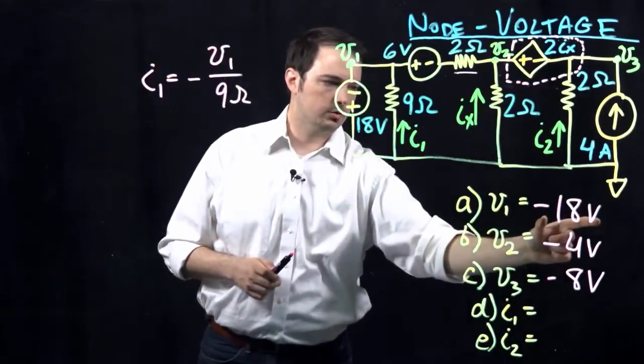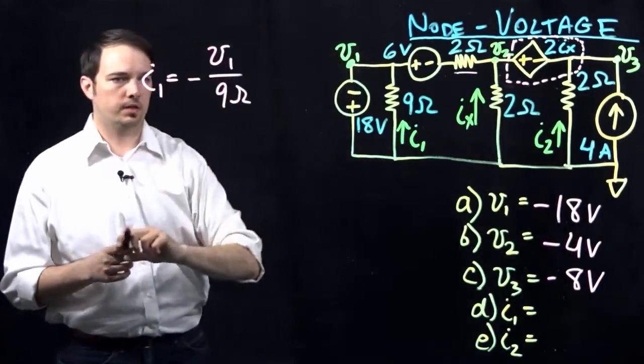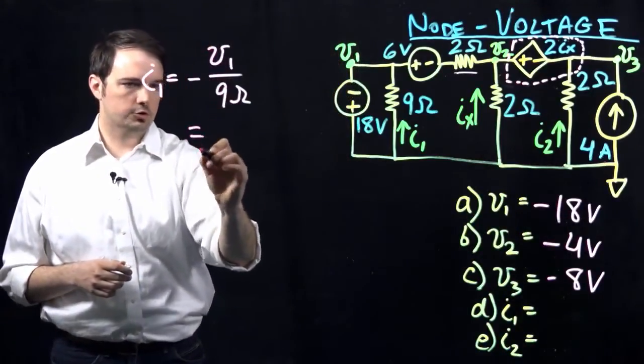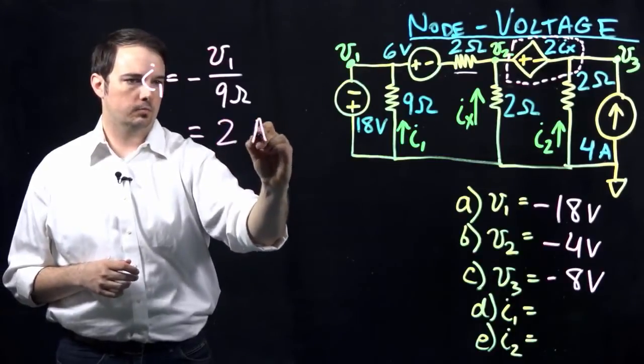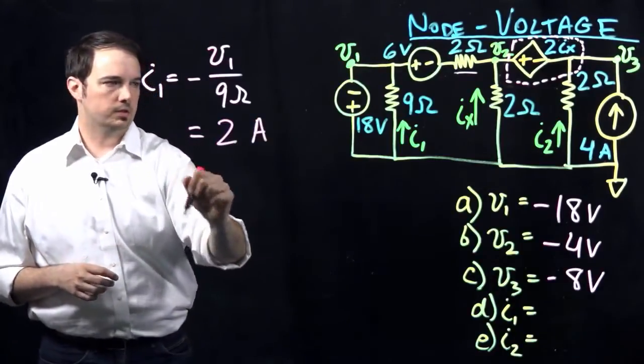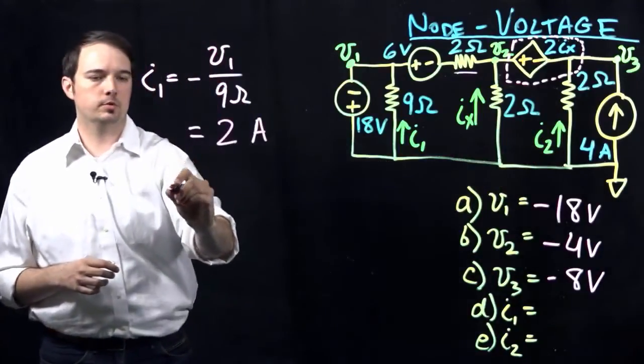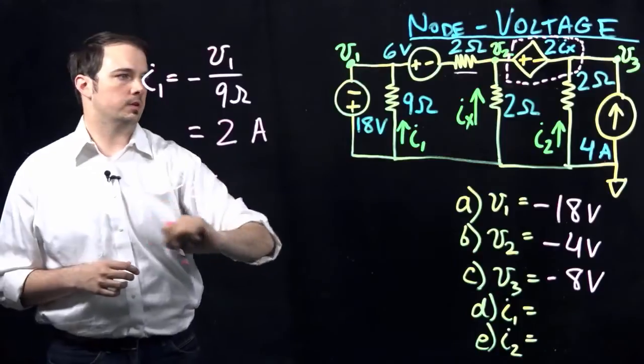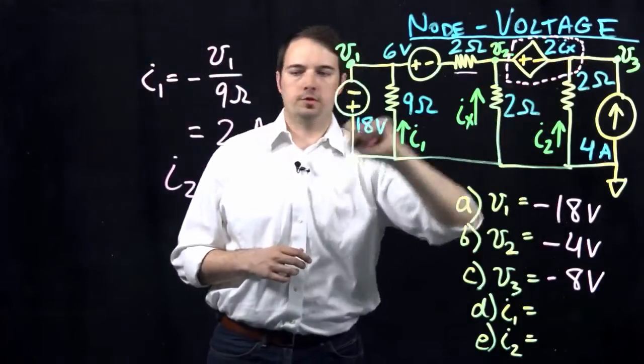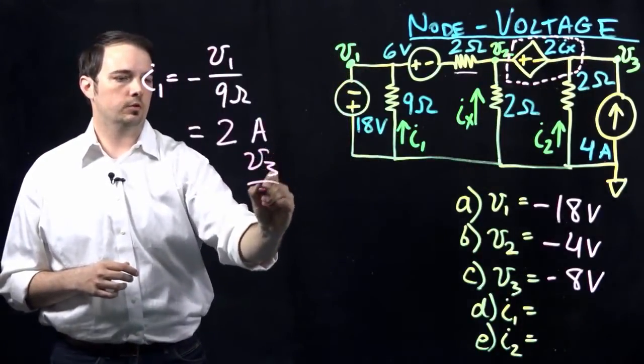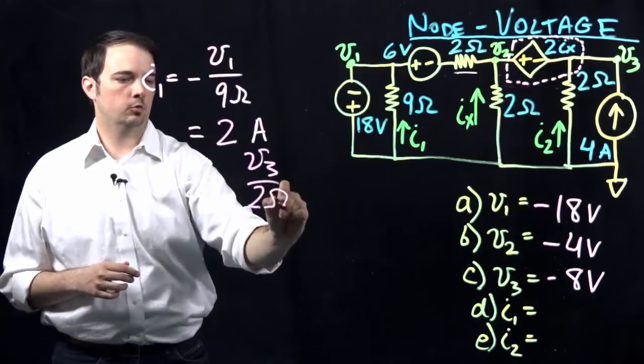So I could now simply substitute, I know what V1 is already, negative 18 volts, plug that in here, of course should just end up with the value of 2 amps for this one. And then similarly for I2, which is the current indicated as traveling through this branch with that 2 ohm resistor would be, now I'm looking at the node voltage V3, so V3 over 2 ohms.